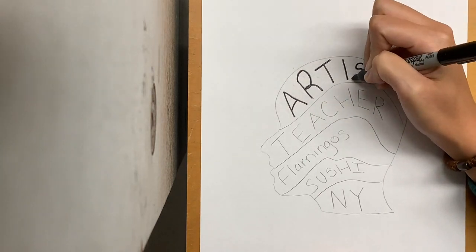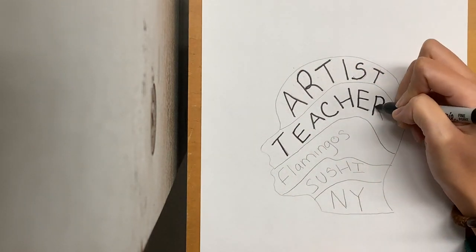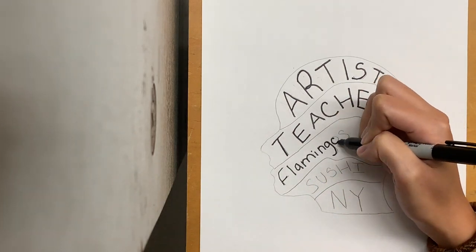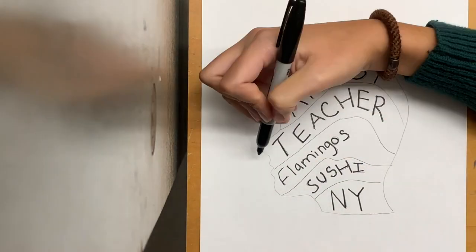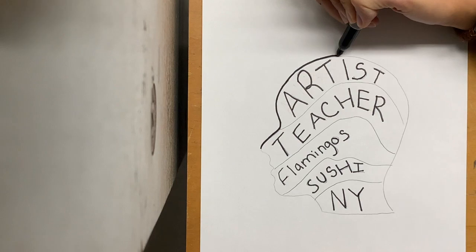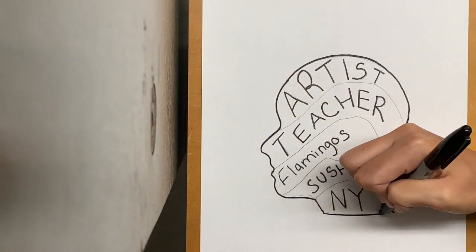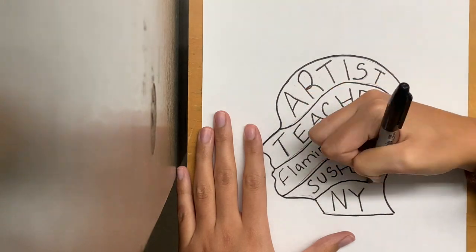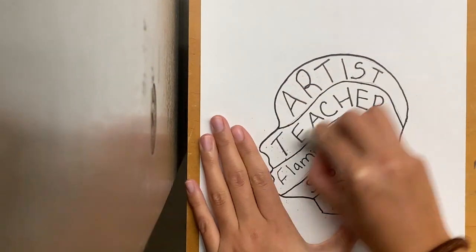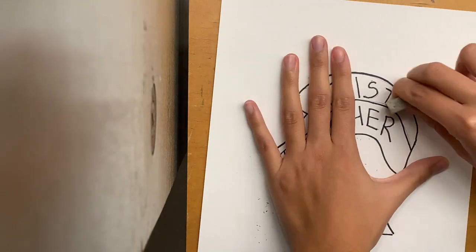Now I'm going to use a black marker and go over all my words and lines in my drawing. By doing this, it will help our words and lines stand out. Then I'll use an eraser and erase all my pencil marks.